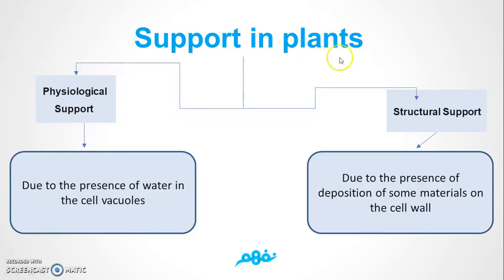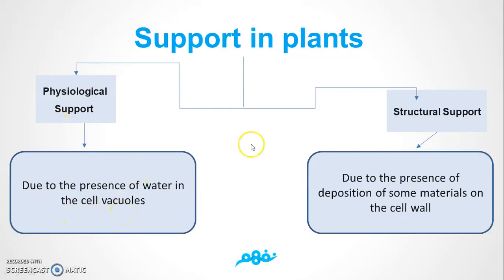The plant possesses different methods and systems for support so as to maintain its shape and for protection. These methods may be physiological, concerning the cell wall, or structural, involving the possession of hard substances on the cell wall. We have physiological support due to the presence of water in the cells, and structural support due to the possession of certain materials on the cell wall. Let's explain the physiological support first.